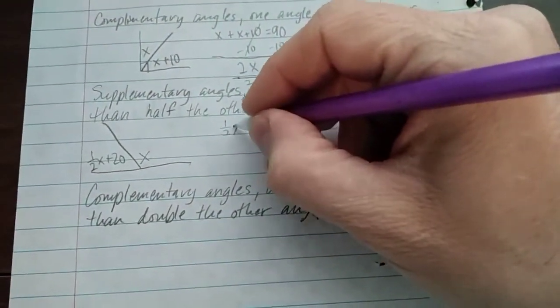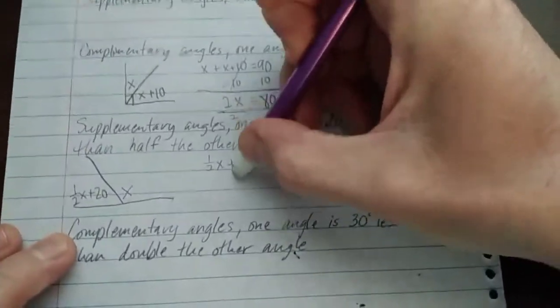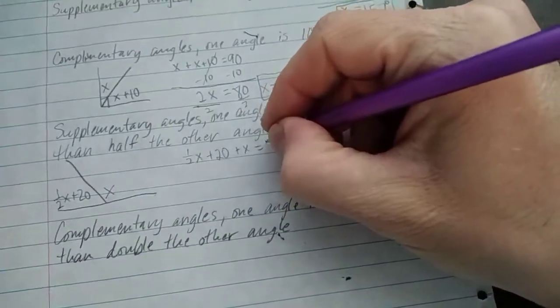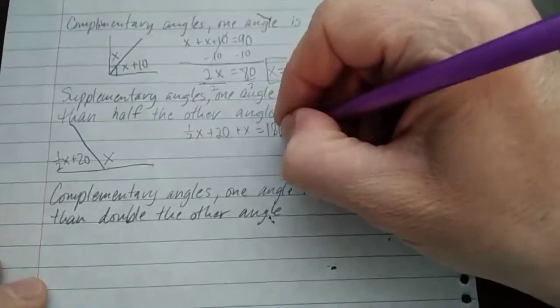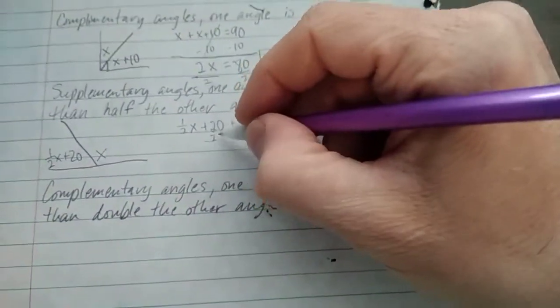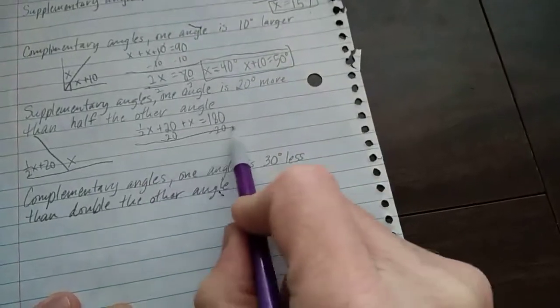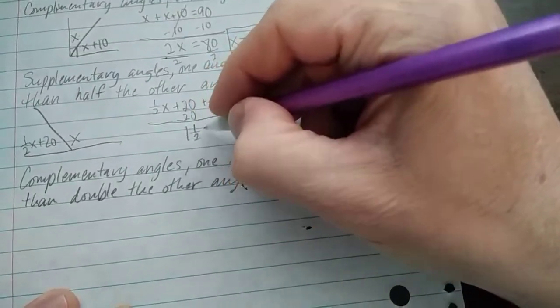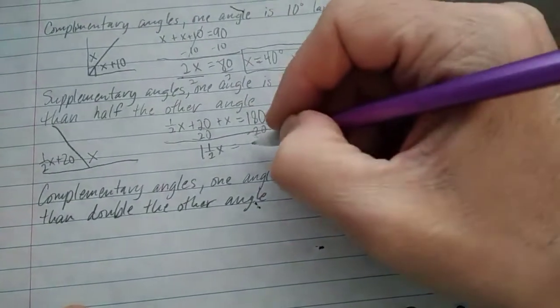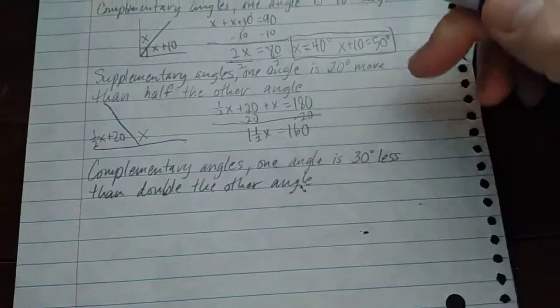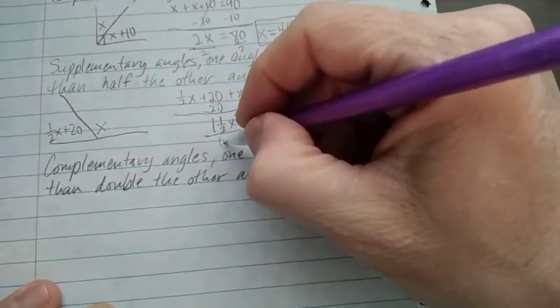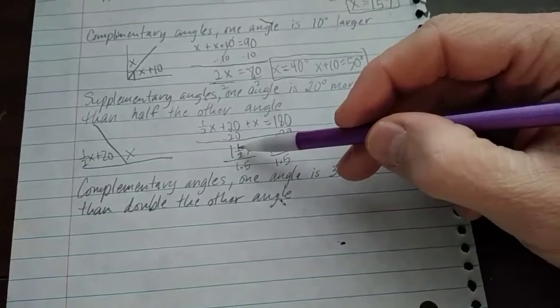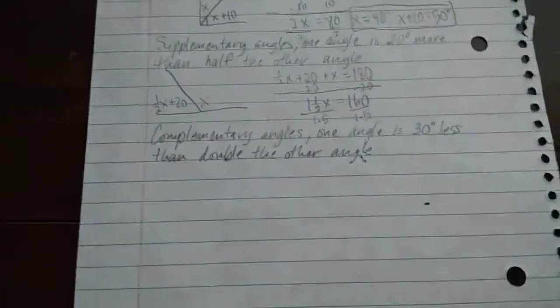Anyway, let's go ahead and write that up. One half x plus 20, I almost put 10, plus x equals 180. So I'm going to subtract 20 from both sides. And at the same time, I'm going to add one half x to x. So that's one and a half x. And that equals 160. So really, I'm dividing both sides by 1.5 because that's what one and a half is. Or you can turn this into three halves and multiply both sides by two thirds.